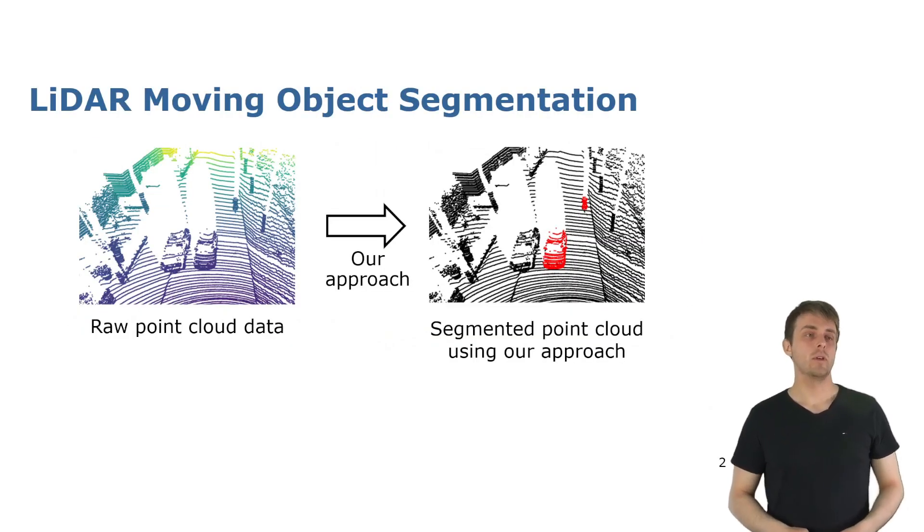Given a raw point cloud as shown on the left, it is often not easy to see what is happening around us. In this case, additional semantic information could help to get a better understanding of the environment. But depending on the task, different semantics might be more important than others.